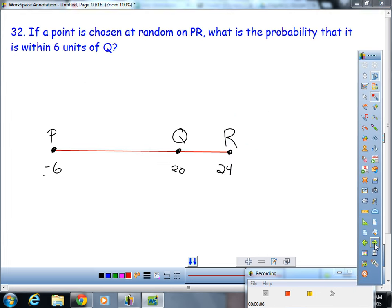If a point is chosen at random on PR, what's the probability that it's within six units of Q? How long is PR? 24 minus negative 6, it's 30 units. There are only four units to the right of QR, so there are four units there that work.